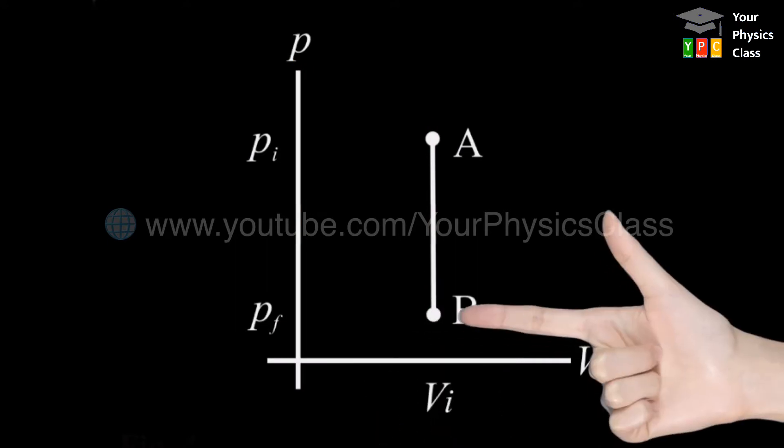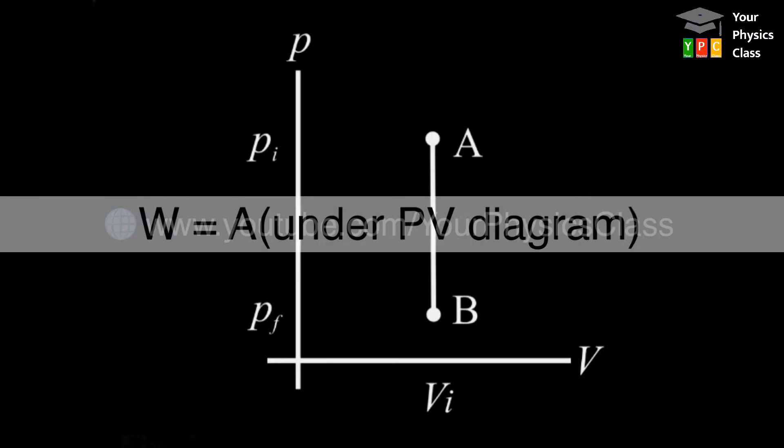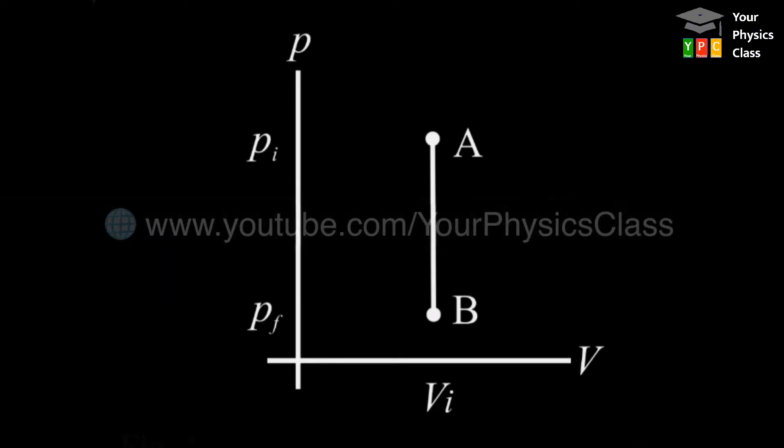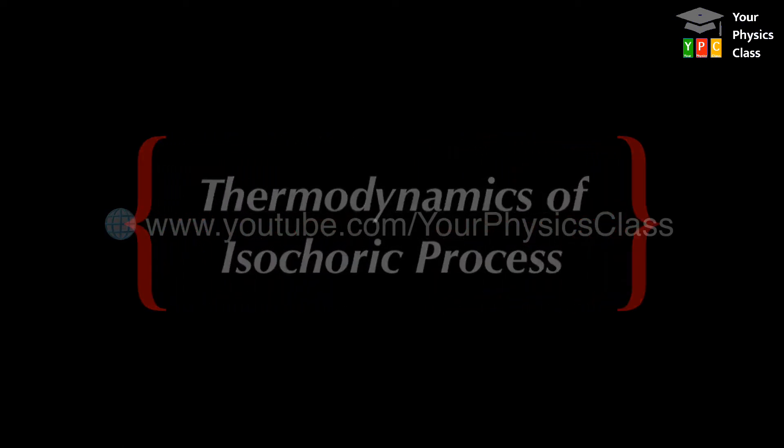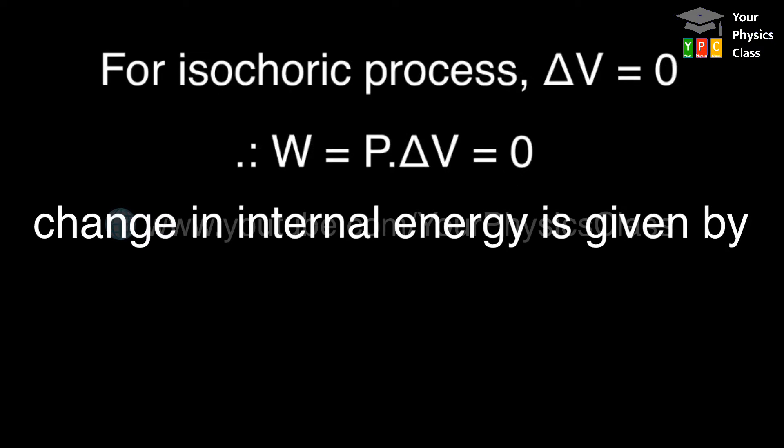As area under the graph is zero, it shows that work done in this process is zero. In the PV diagram, the measure of work done is the area under the graph, and here the area under the graph is nothing, meaning zero. This is why work done in this process is also zero. For an isochoric process, delta V is zero and the system does not do any work.